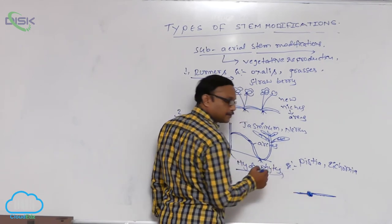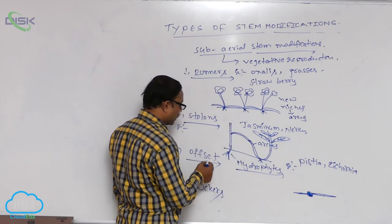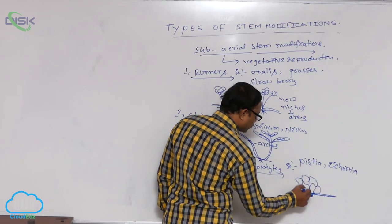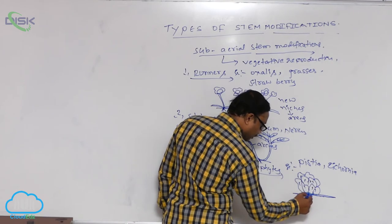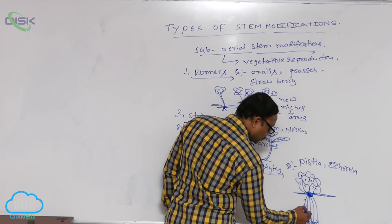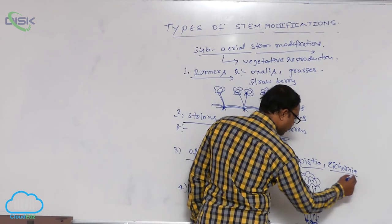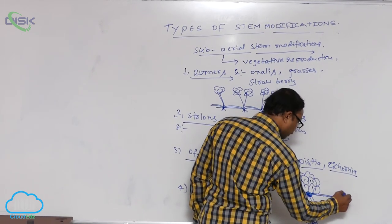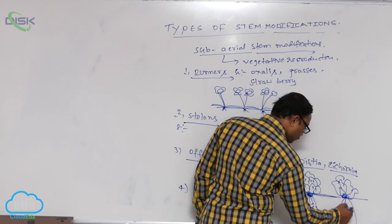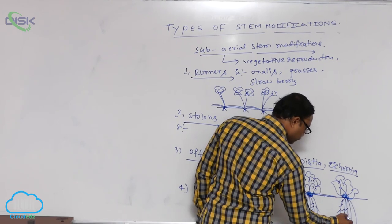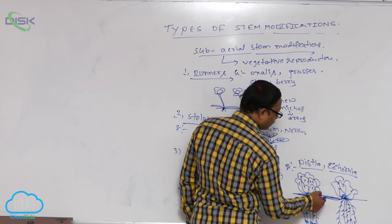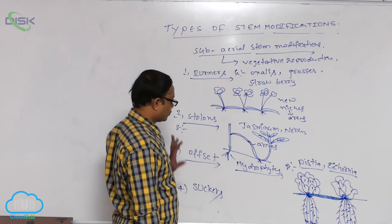Offsets are one-internode-length branches produced from the axil of leaves of a discoid stem. Each offset has rosette-type leaves above — arranged like rose petals — and a bunch of roots formed below, known as balancing roots. These roots provide balance to the plant. The examples are Pistia and Eichhornia.